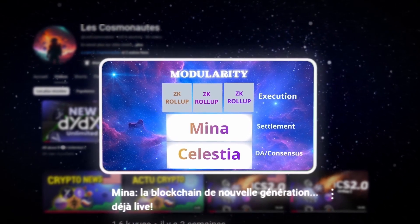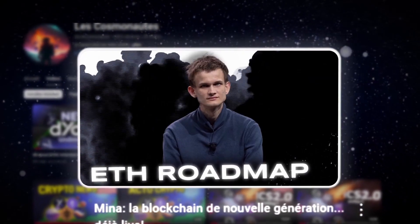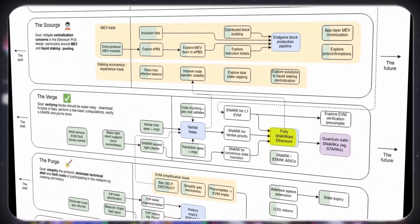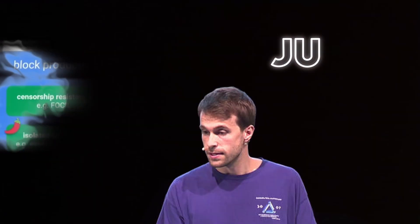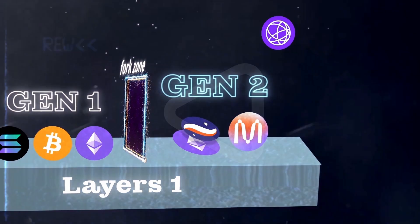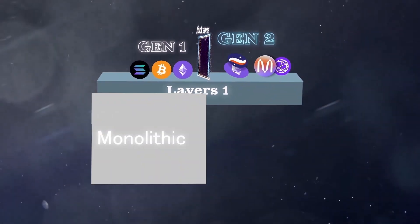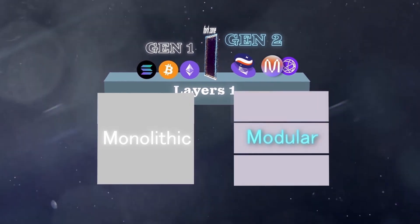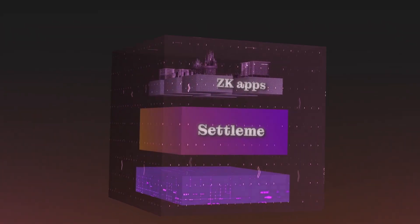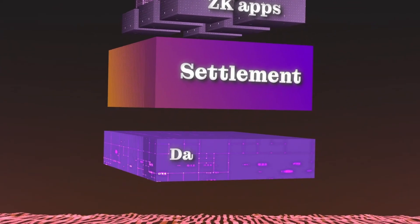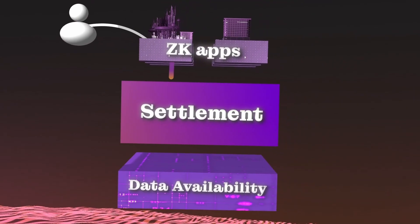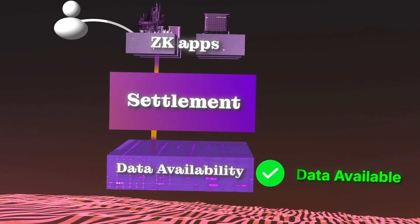If you haven't already, I strongly recommend watching the video on MENA. It will help you understand the architectural decisions ahead for Ethereum, whether in Vitalik's roadmap or more recently just in Drake's updates. It also highlights how MENA and Celestia are two projects that specialize to such a degree that one cannot truly function without the other.